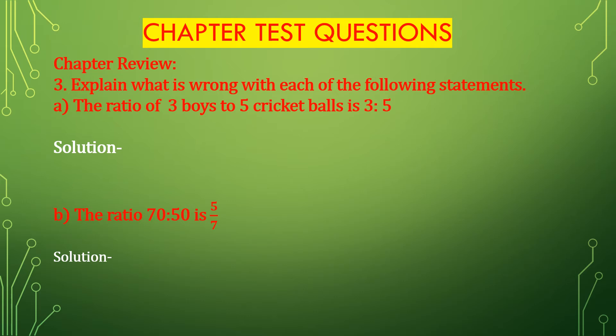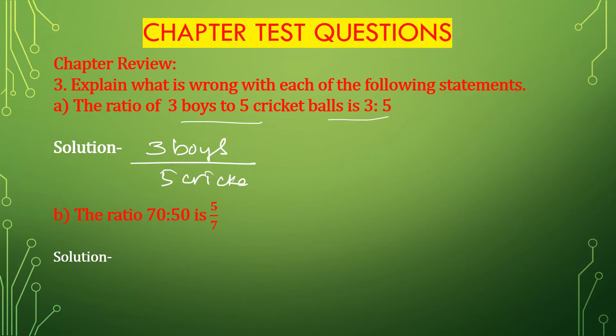Now question number 3: Explain what is wrong with each of the following statements. First, bit A: the ratio of 3 boys to 5 cricket balls is 3 to 5. Here the antecedent and the consequent are not in equal units, because the antecedent is in boys and the consequent is in cricket balls.